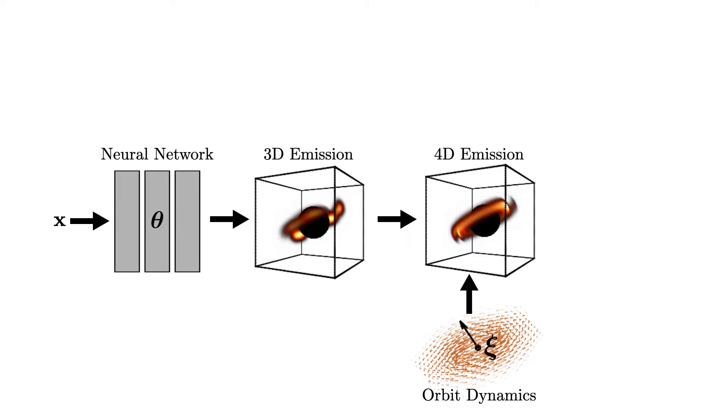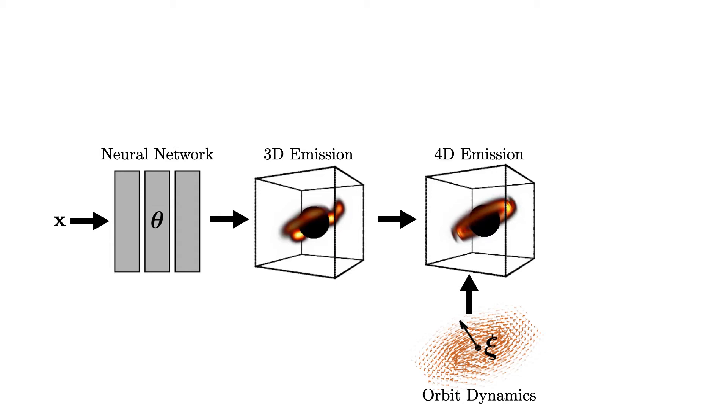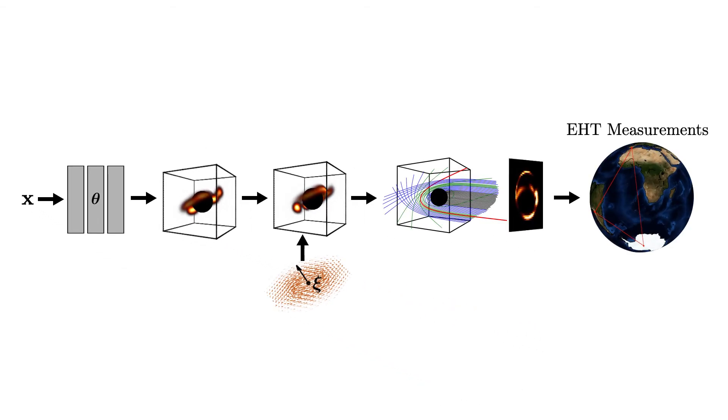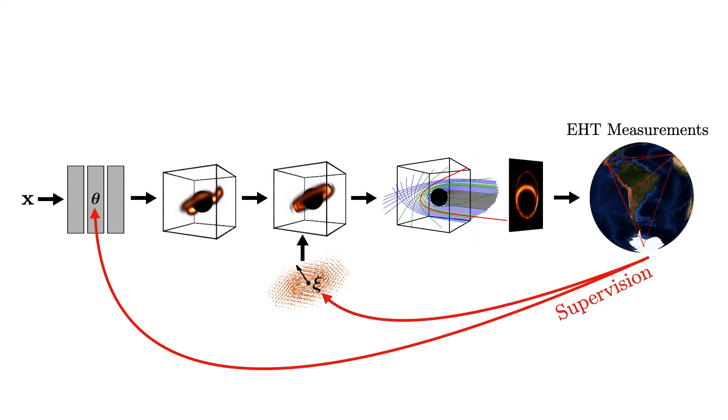By leveraging the physics of Keplerian orbit dynamics, we propagate 3D emission across time to give a 4D spatiotemporal evolution. In the inverse direction, EHT measurements act as supervision for the unknown network parameters and rotation axis which are jointly estimated.